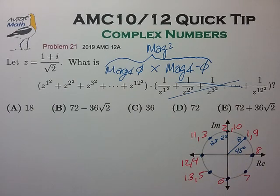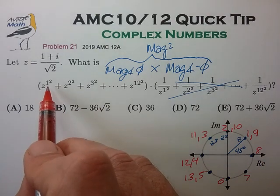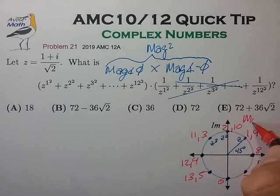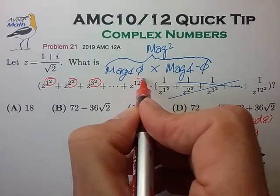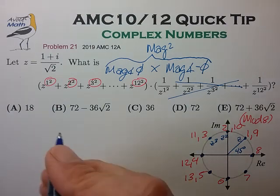And so on. So essentially where we end up on this constellation has everything to do with what the power is in mod eight. And that's a critical observation. So we really need to examine what these powers are in modulus eight.